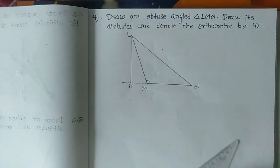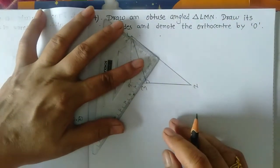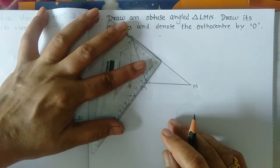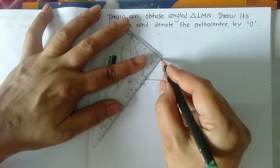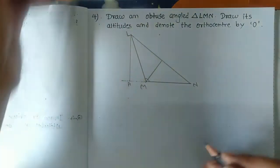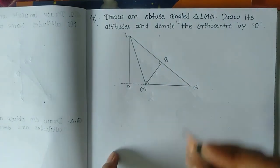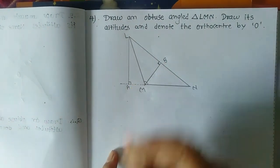Now draw the altitude on side LN from the opposite vertex M. Draw the altitude and label this point B. Put the small square sign to indicate that it is perpendicular.